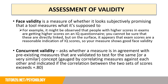So let's recap. We've looked at two types of internal validity and two types of external validity. Now we're going to look at the assessment of validity — how can we assess that a measure is accurate? First, face validity: it's a measure of whether it looks subjectively promising that a tool measures what it's supposed to. For example, if people with higher exam scores are also getting higher scores on an IQ questionnaire, you can't be certain these are directly linked, but on the surface it appears exam scores are a reasonable indication of IQ scores — good face validity. The second way to assess validity is concurrent validity, which asks whether a measure agrees with pre-existing validated measures for the same concept, gauged by correlating measures against each other. This is indicated if the correlation coefficient between the two sets of scores exceeds +0.80.